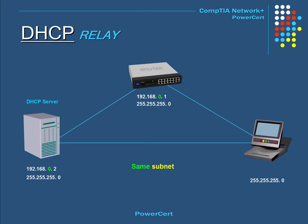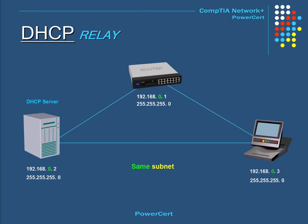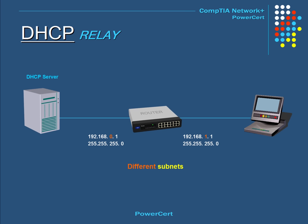When a computer needs an IP address, it broadcasts its request to a DHCP server. If the DHCP server is on the same subnet as the computer — meaning they are using the same IP address settings — the DHCP server will receive the request and assign the computer an IP address. However, if the computer and the DHCP server are not on the same subnet, additional configuration is required.